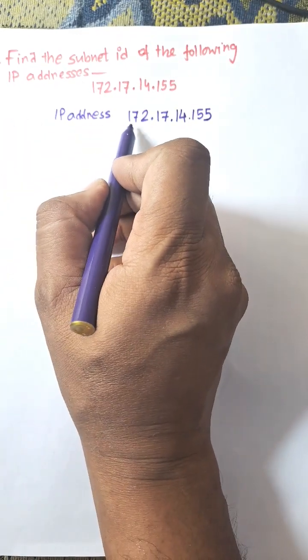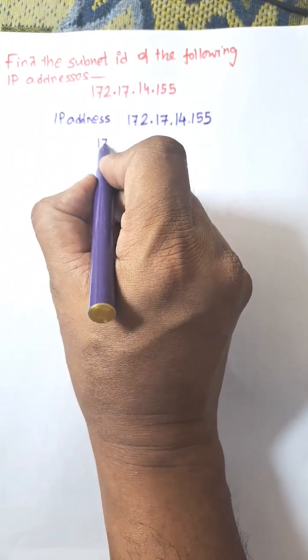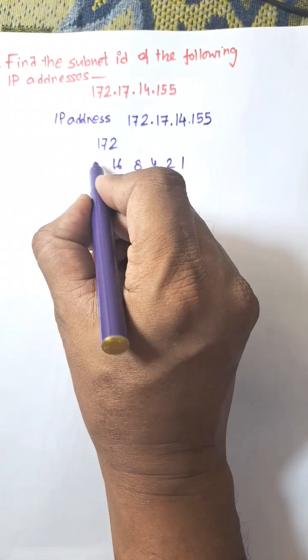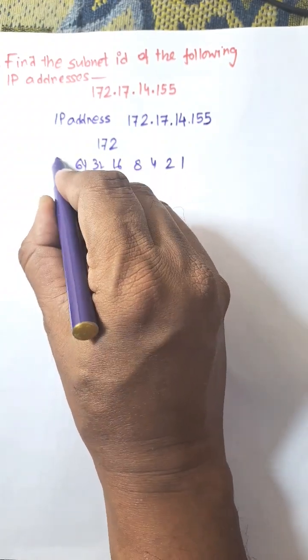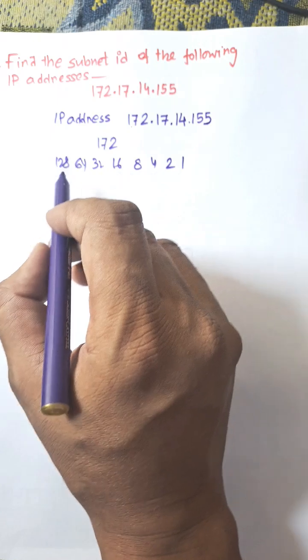Here the IP address is given so first of all we need to find the binary number for 172. Here 1, 2, 4, 8, 16, 32, 64, 128. Every octet is 8 bit number so we need to convert it into equivalent binary.